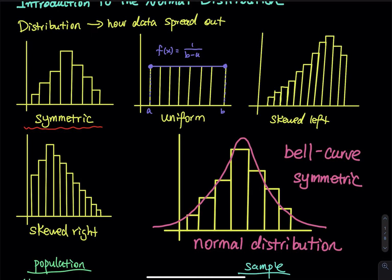Let's compare the pink curve and the yellow bars. For normal distribution, everything looks good. If you look at the bars, we have the mean, the mode, and the median right in the middle. If you look at the pink curve, the highest point is right in the middle. So here is how I interpret normal distribution: we have the mean, median, and mode right in the middle.